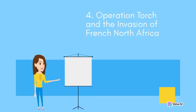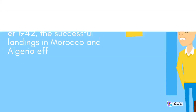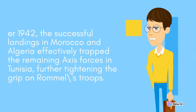Operation Torch and the Invasion of French North Africa: while the British Eighth Army was making progress in Egypt, the Allies devised Operation Torch, a combined British-American amphibious operation aimed at liberating French North Africa. The successful landings in Morocco and Algeria in 1942 effectively trapped the remaining Axis forces in Tunisia, further tightening the grip on Rommel's troops.